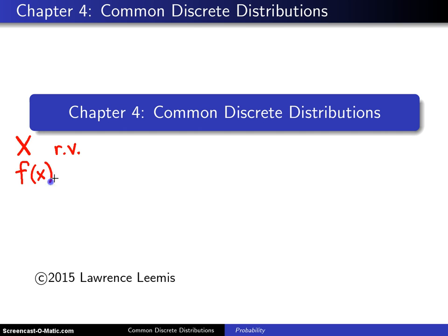If X happens to be a discrete random variable, then f of x, which is known as the probability mass function, describes its probability distribution. This function sums to 1 and is greater than 0 on all of the support values, and the support values for that random variable are described by script A.